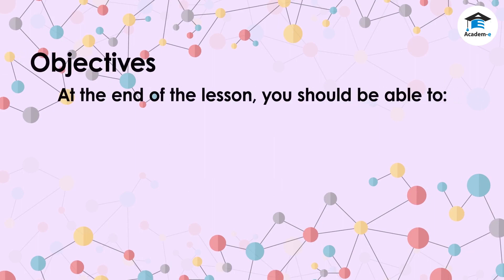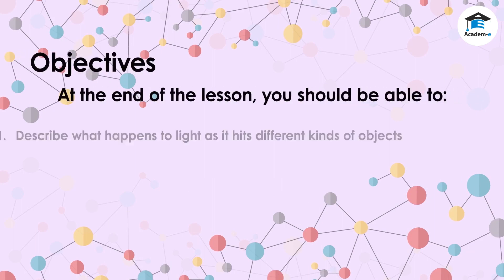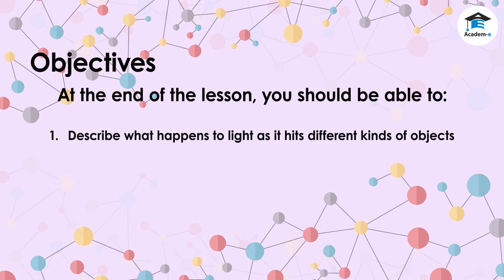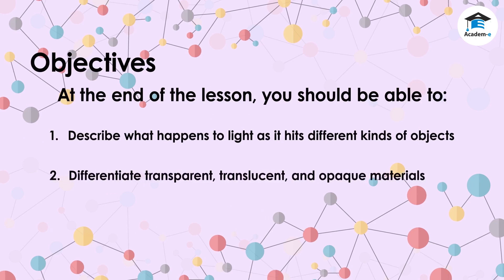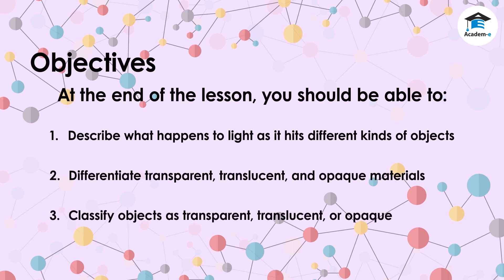Objectives. At the end of the lesson, you should be able to describe what happens to light as it hits different kinds of objects, differentiate transparent, translucent, and opaque materials, and classify objects as transparent, translucent, or opaque.